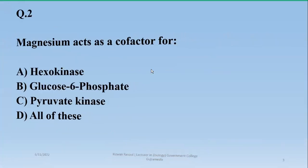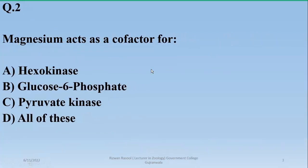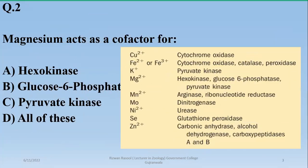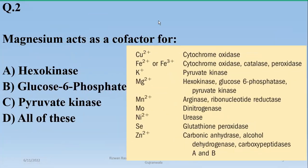Question number two: Magnesium acts as a cofactor for hexokinase, glucose-6-phosphate, and pyruvate kinase. So the right option is delta. Magnesium is the activator cofactor, and the right option is delta.